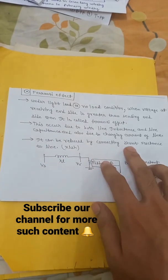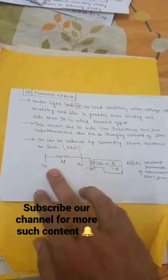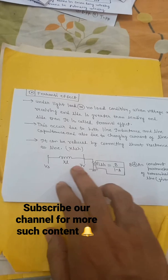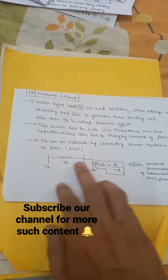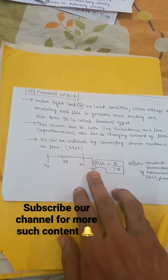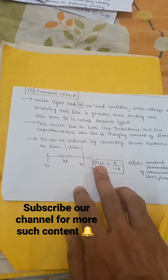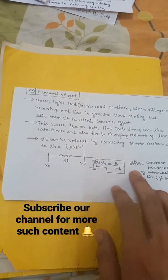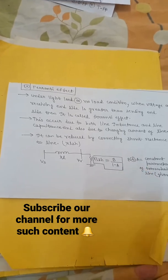And third point is we can reduce this by connecting the shunt reactance across the line. So this is the sending and receiving end, and between that line inductance is there, and where shunt inductance we have connected here. That shunt inductance we are referring it as XLSH, that is equal to B upon 1 minus A, where B and A are the constants of the transmission.